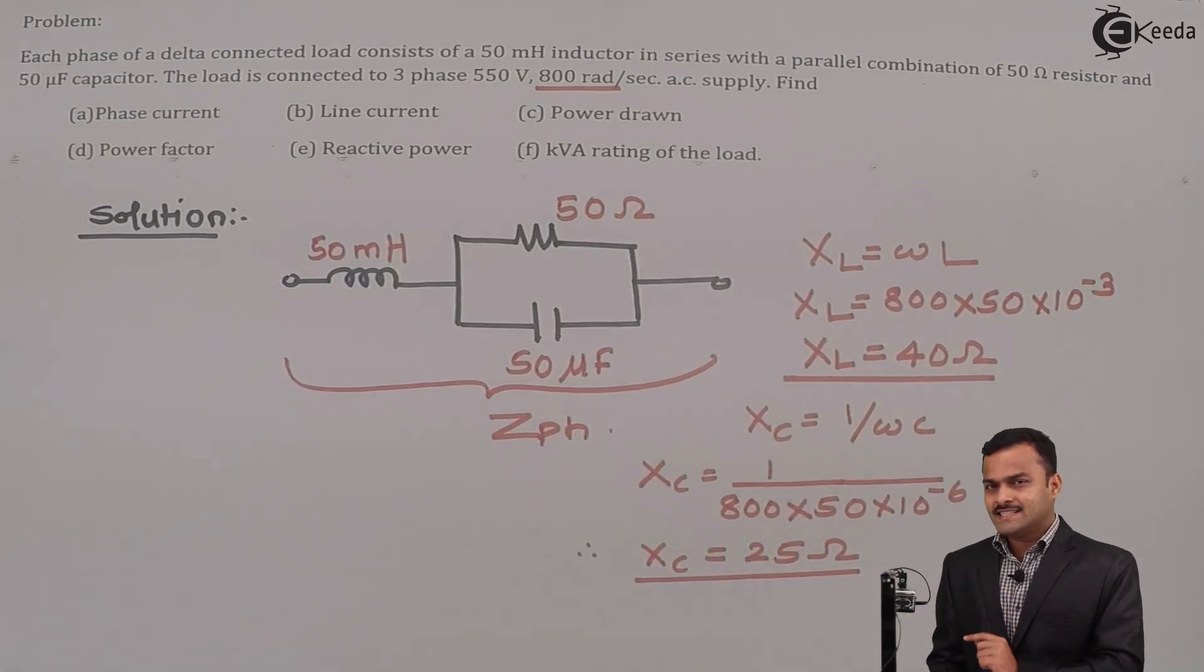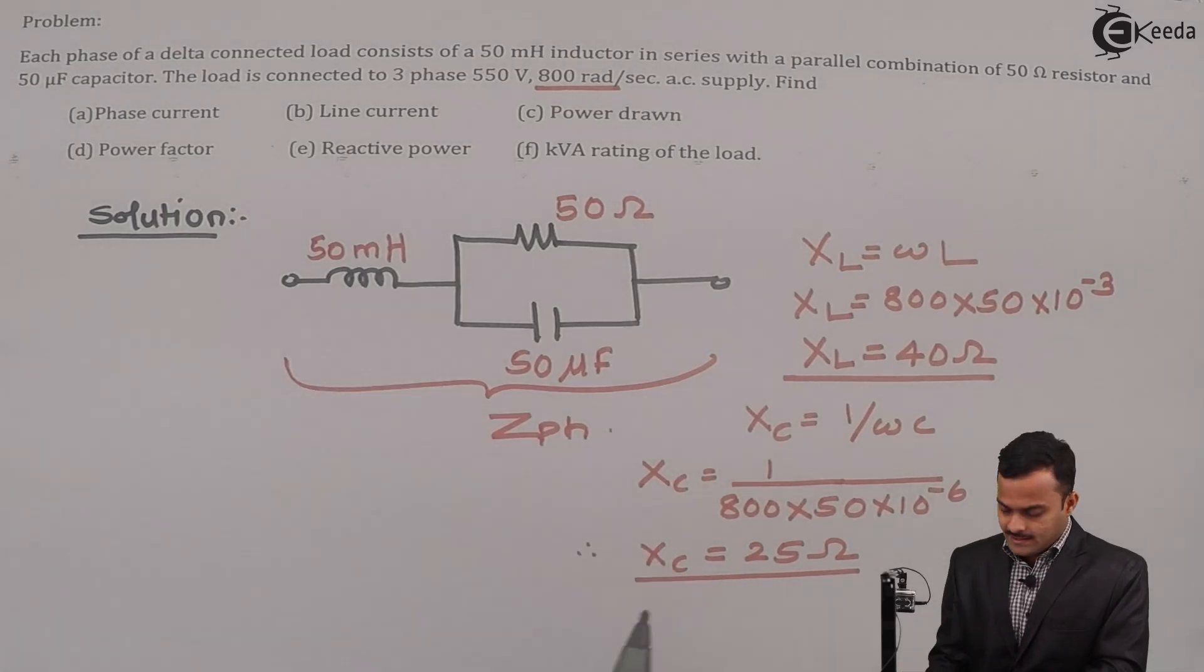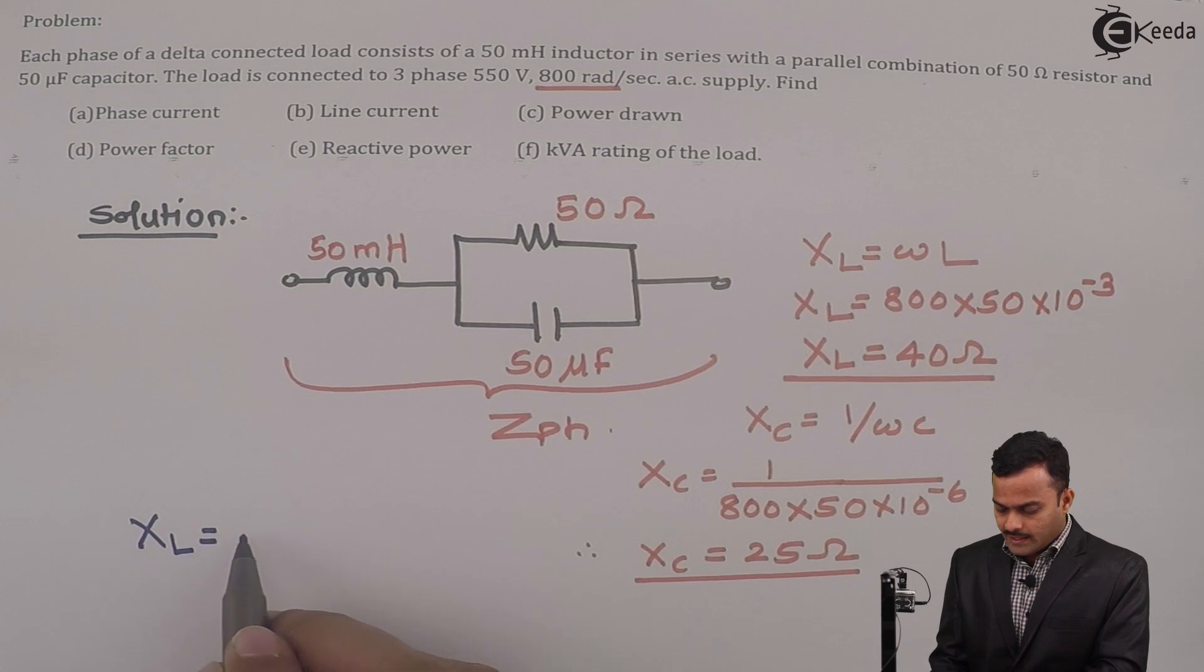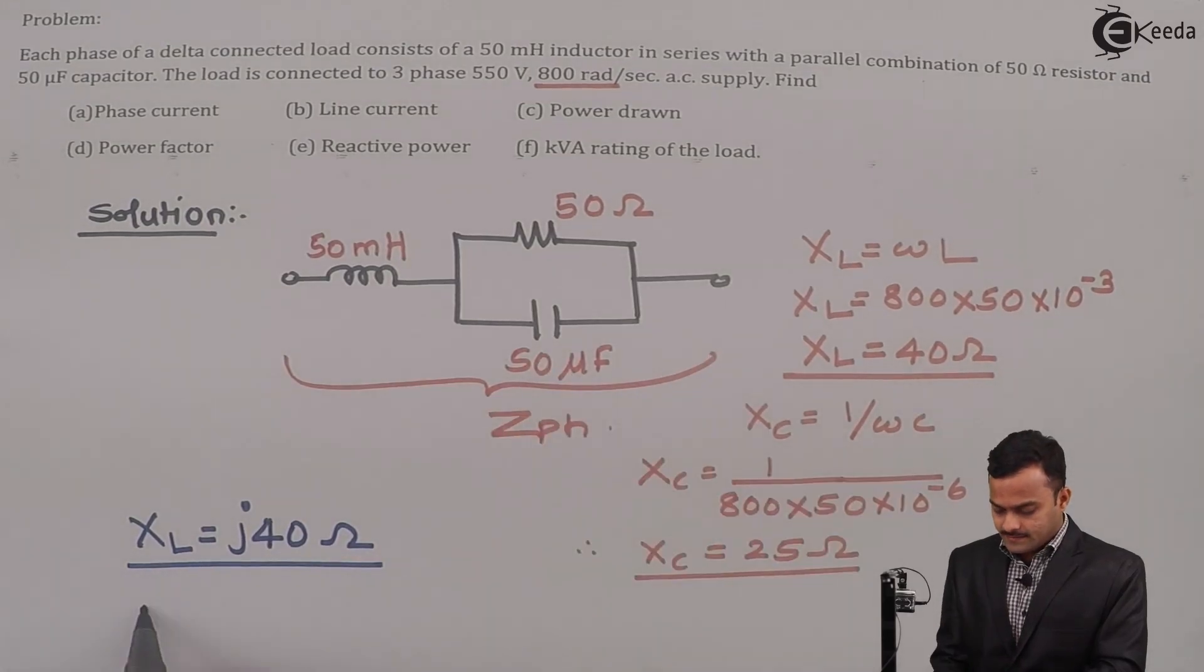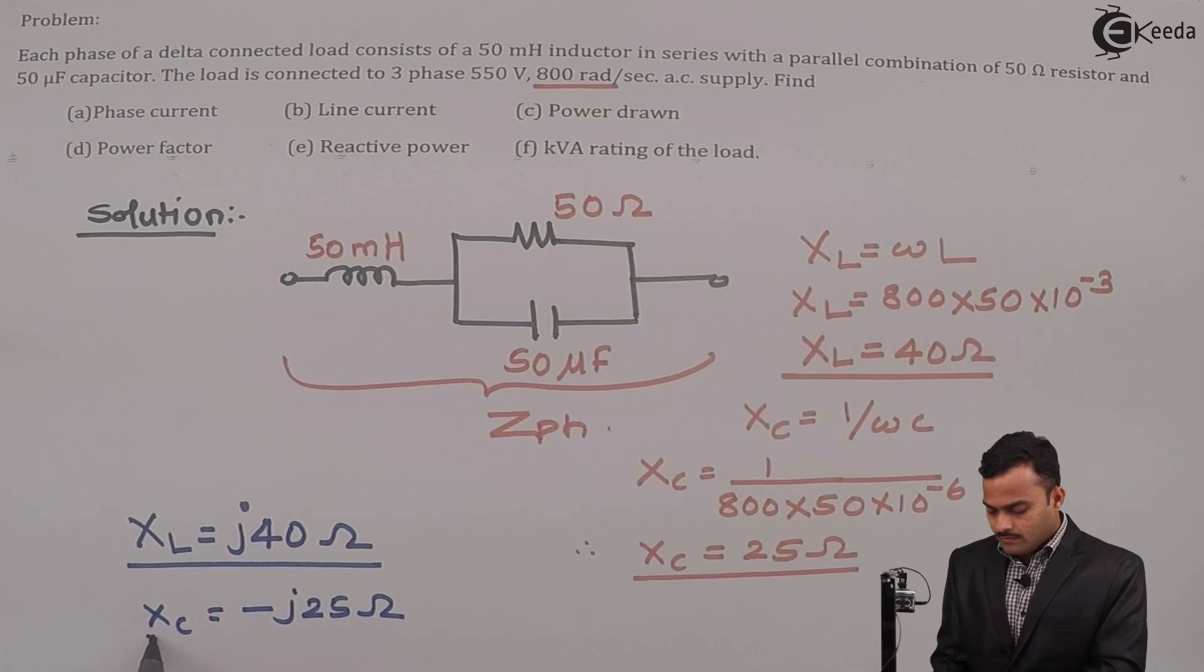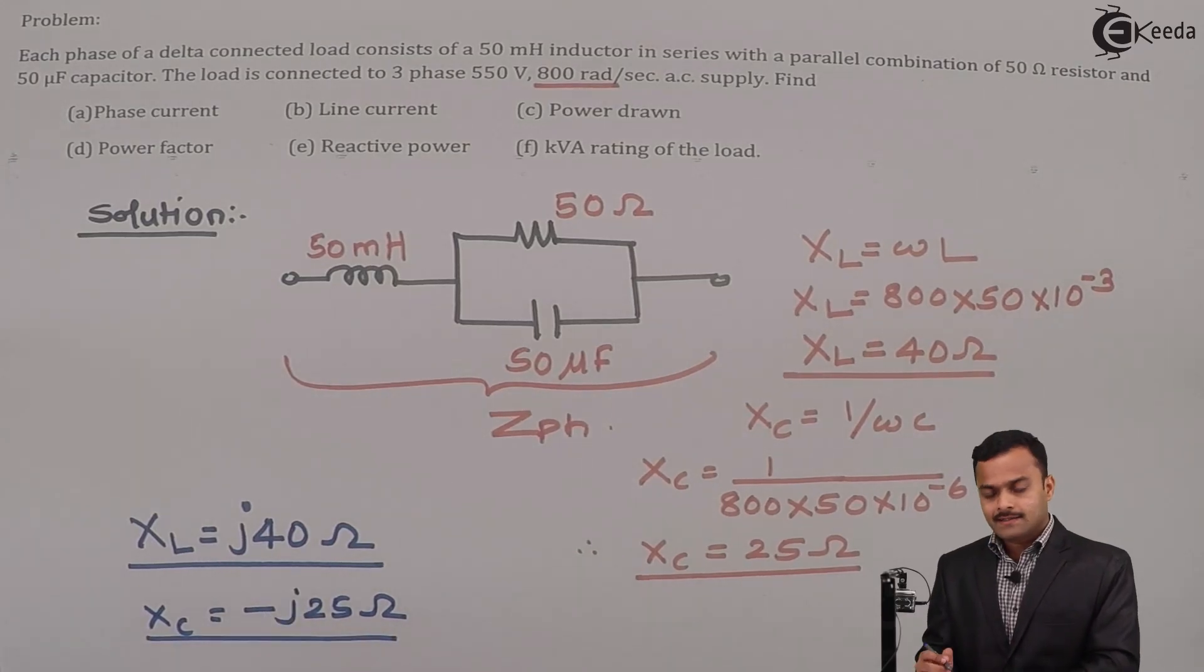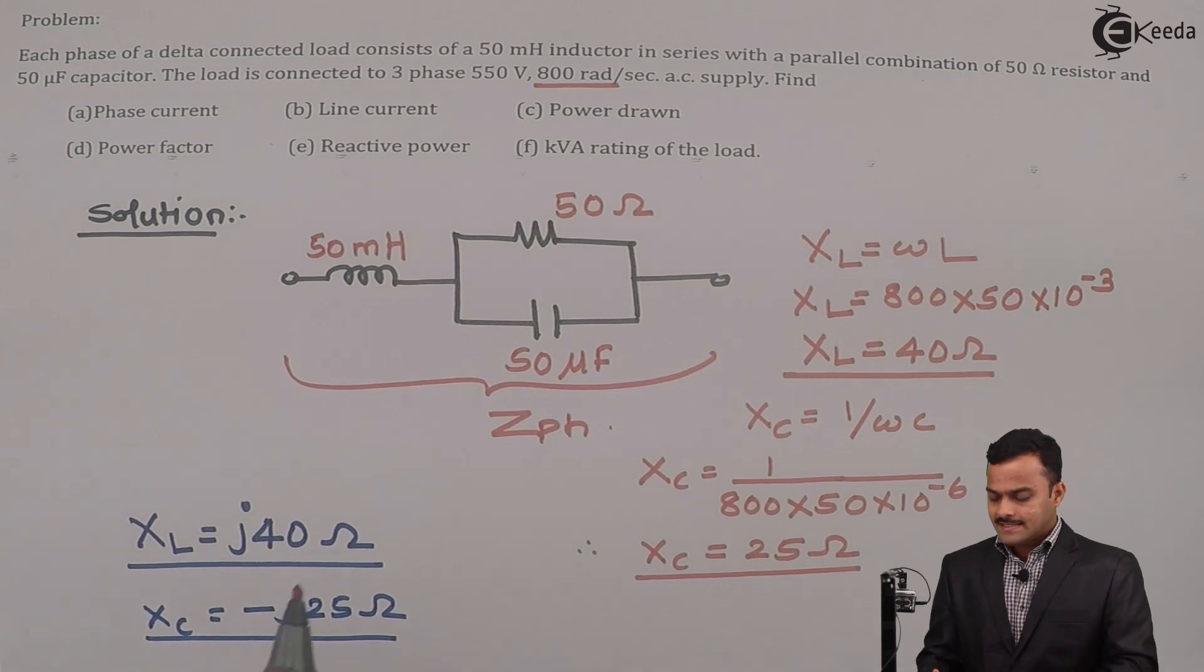Now we are just considering the magnitude of XL and XC, but whenever we calculate the ZPH we should consider this as a complex number. Whenever we calculate the ZPH by using series and parallel combination, make sure that this XL will be J 40 ohm and this XC will be minus J 25 ohm because for the inductive circuit reactance the reactive part will be positive and for a capacitive circuit it will be negative.